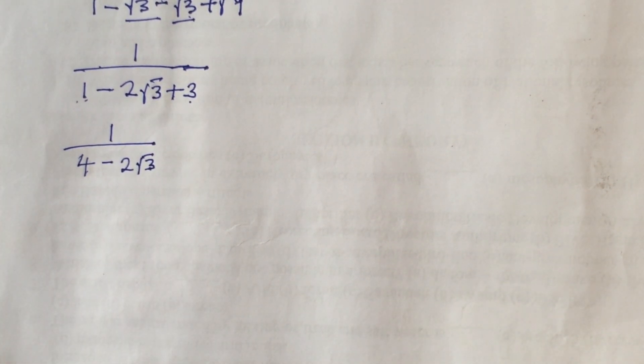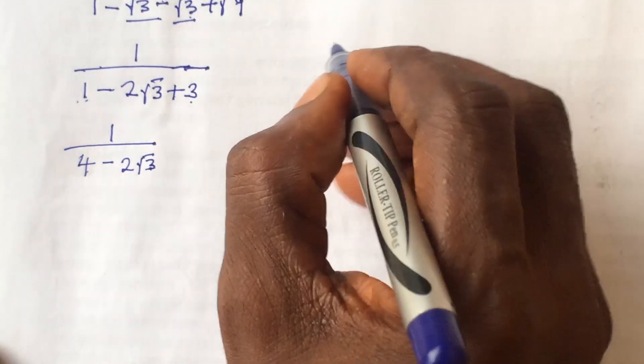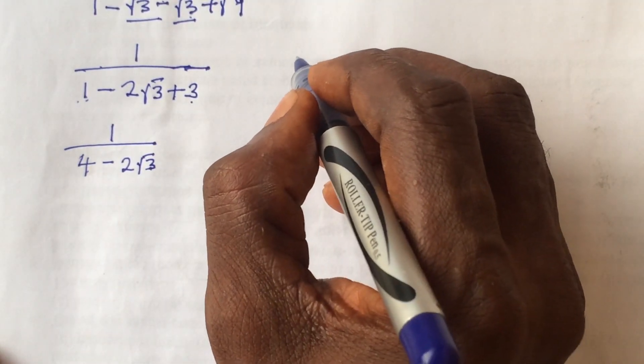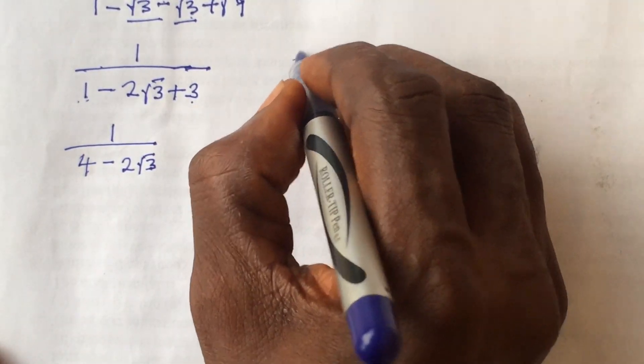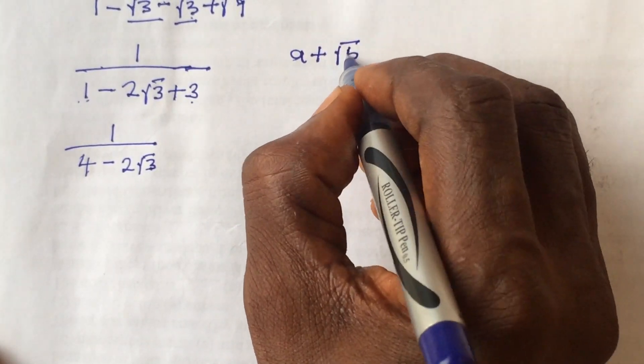We go ahead to find the conjugate of the surd, or we say we rationalize the denominator. Remember the law in surds which says: if you have a plus root b, then the conjugate of this is a minus root b.